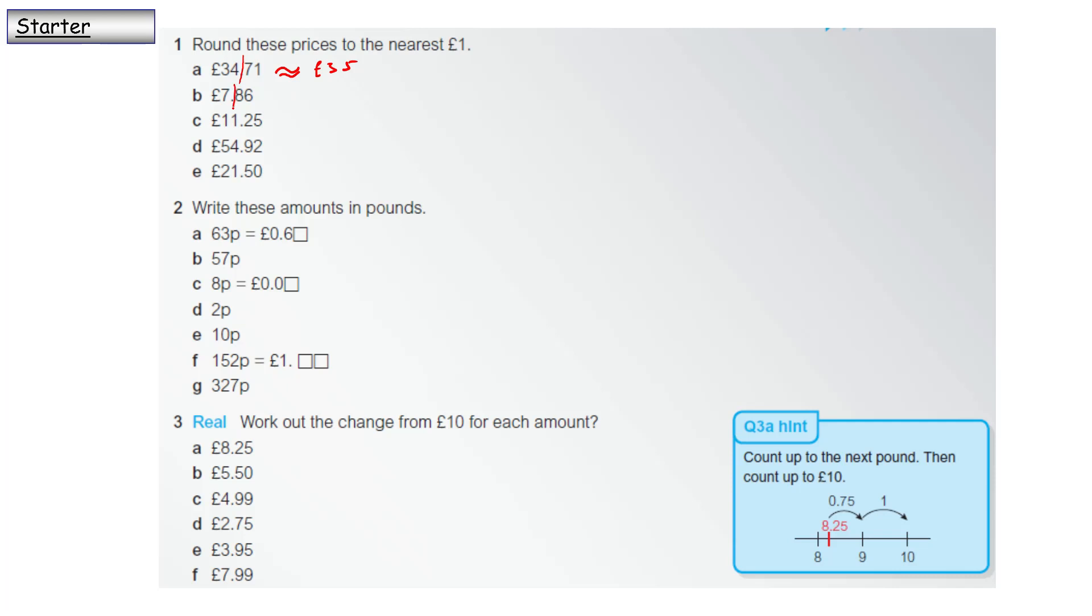It's the nearest pound, so we put our line here. Does the eight affect the seven? Yes, so that's going to be approximately £88. Put our line here - does the two affect the one? No, it doesn't because it's less than five. That's approximately £11.